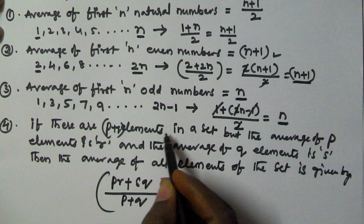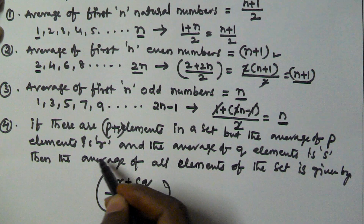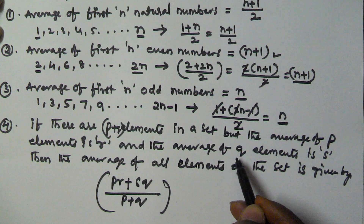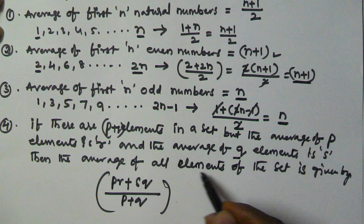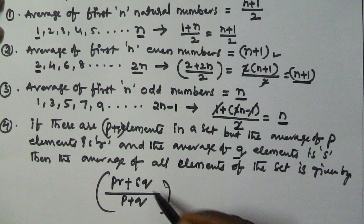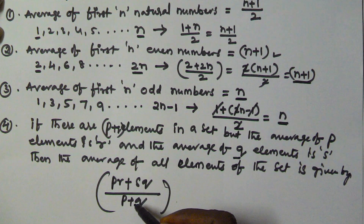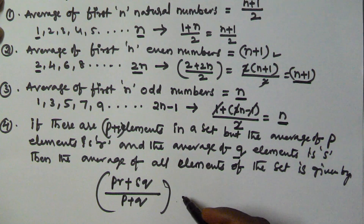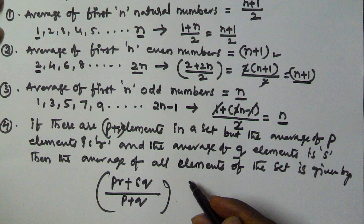To summarize: if there are p + q elements in a set, and the average of p elements is r and the average of q elements is s, then the average of all elements is (pr + qs) / (p + q). I hope you got this. Thank you very much for watching this video. Please subscribe to my channel.